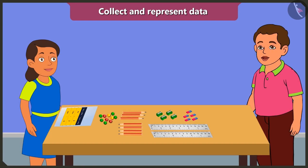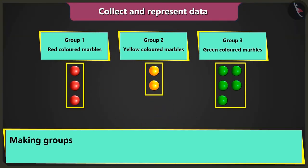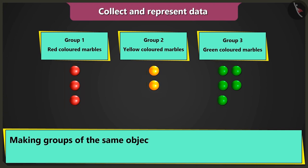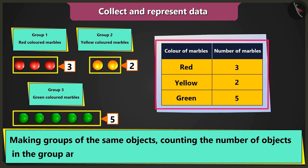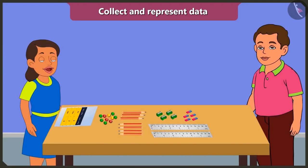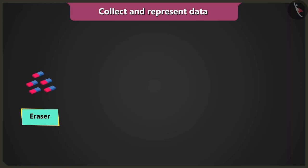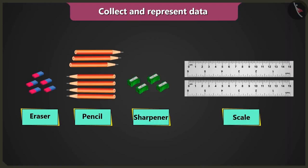Well done, Bubbly. You represented the data very well. Data? What is that? Making groups of similar objects, counting the number of objects in the group, and filling that information in a table is called data. This way I can easily know how many erasers, pencils, sharpeners, and scales I have.